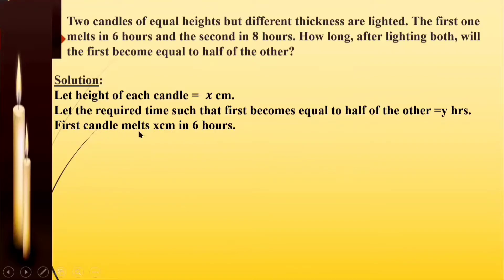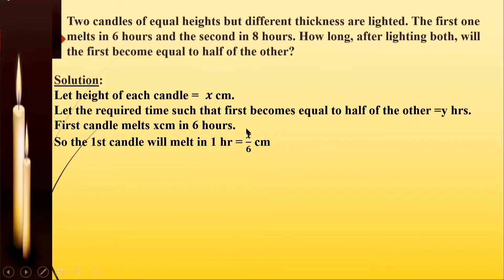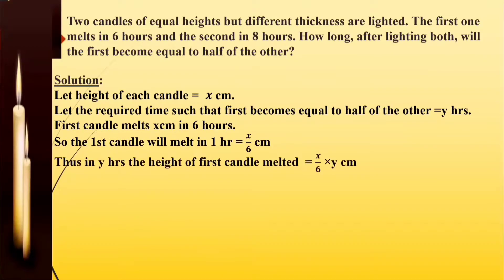x centimeters of candle height completely melts in six hours. So in six hours x centimeters melts, meaning in one hour x upon 6 centimeters melt. If in one hour it is melting x upon 6, then in y hours it will melt x upon 6 into y centimeters.